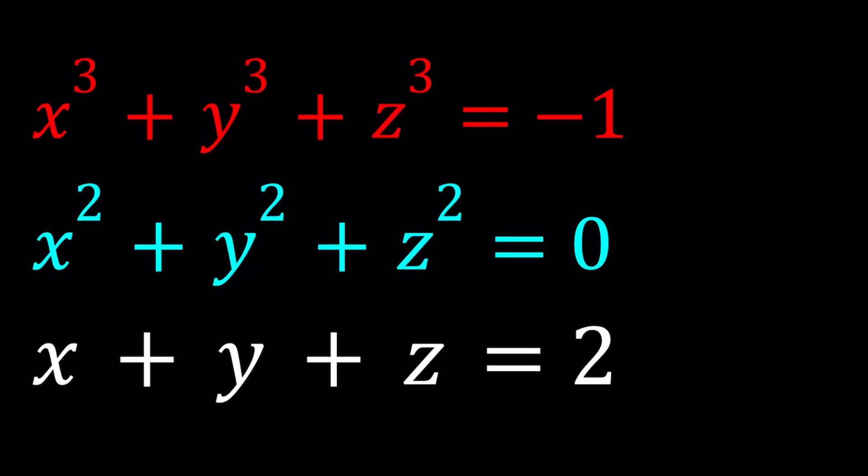Hello everyone. In this video, we're going to be solving a polynomial system. We have x³ + y³ + z³ = -1, x² + y² + z² = 0, and x + y + z = 2. I'll be presenting two methods. We're going to talk about something that is very helpful if you are studying algebra, especially polynomials.